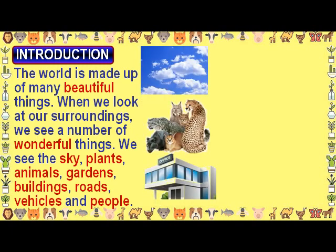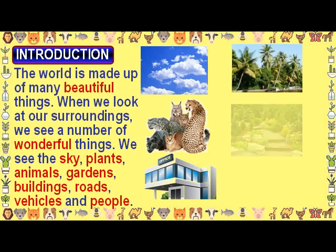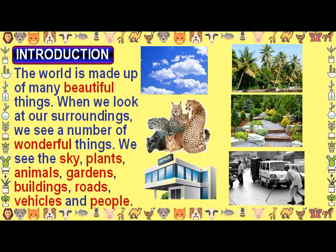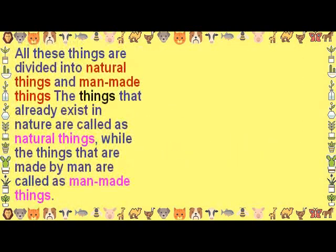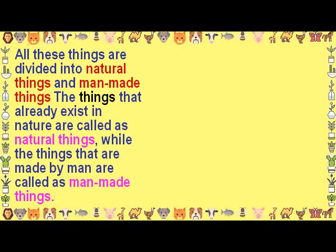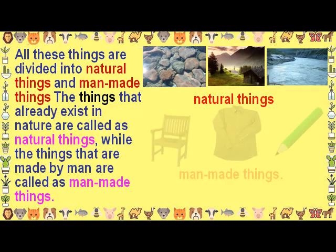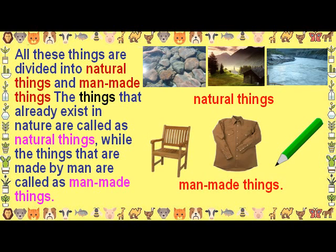We see the sky, plants, animals, gardens, buildings, roads, vehicles, and people. All these things are divided into natural things and man-made things. The things that already exist in nature are called natural things, while the things that are made by man are called man-made things.